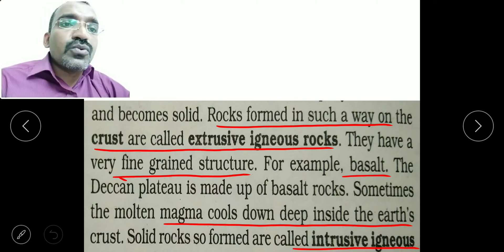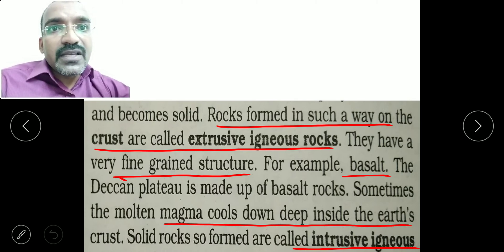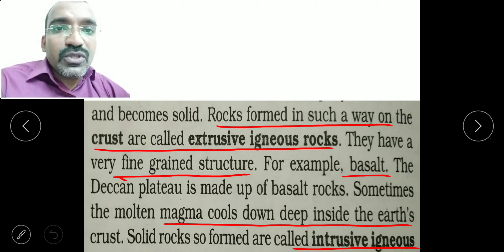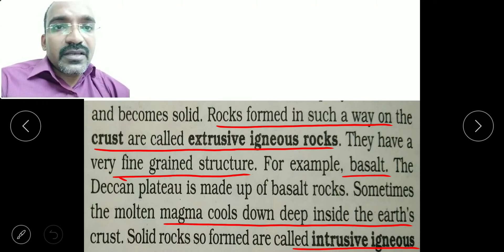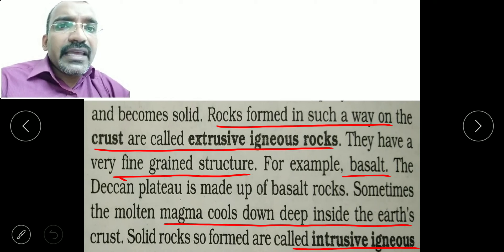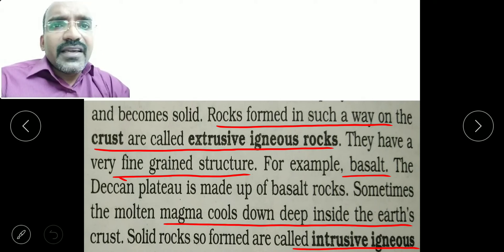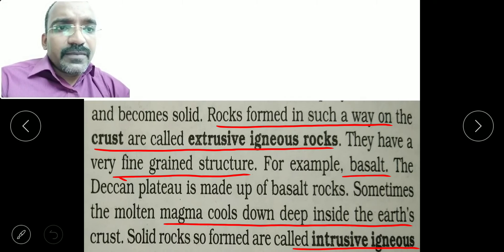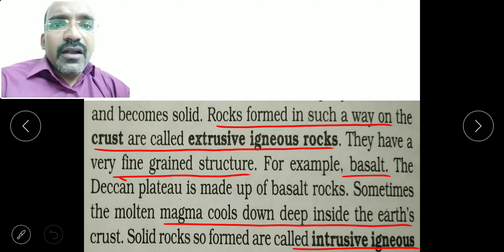These are called extrusive igneous rocks. They have a very fine-grained structure. For example, basalt. Basalt is an example of extrusive igneous rocks. The Deccan Plateau is made up of basalt rocks.